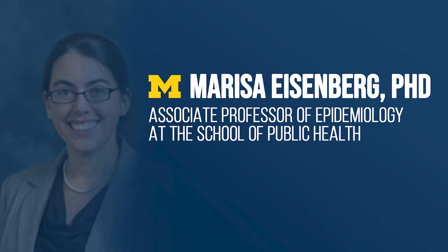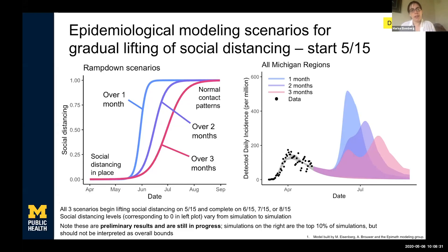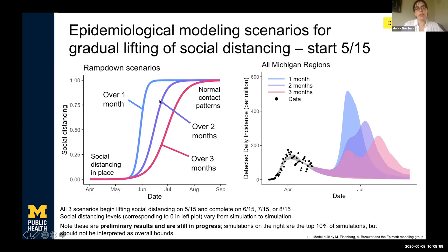I wanted to talk a little bit about some of the modeling work that we've been doing. We've been building short-term forecasting models at the county, regional, and statewide levels. We've also been doing simulation to look at scenarios for lifting social distancing as we start to re-engage and reopen. This is an in-progress set of simulations looking at what happens as we begin to lift social distancing over three different scenarios: a one-month period, a two-month period, and a three-month period, where we go from full social distancing back to normal contact patterns.